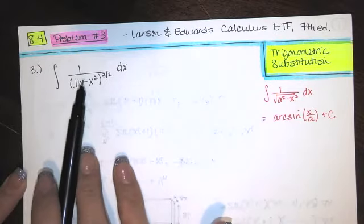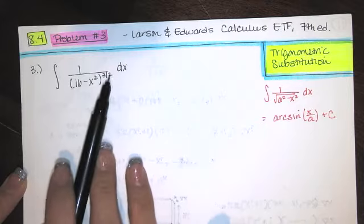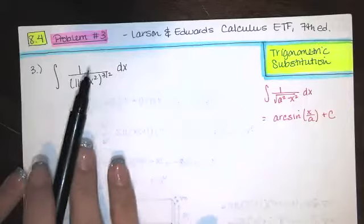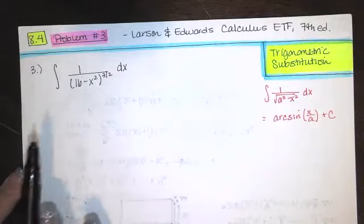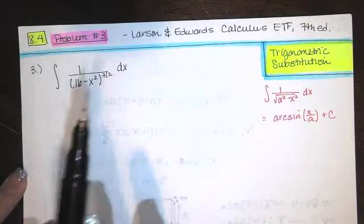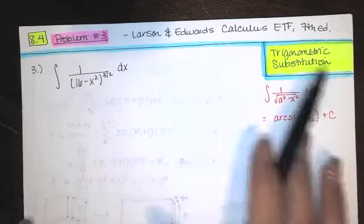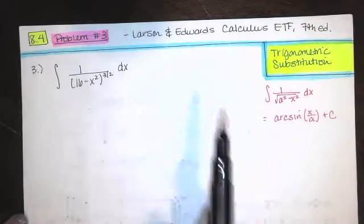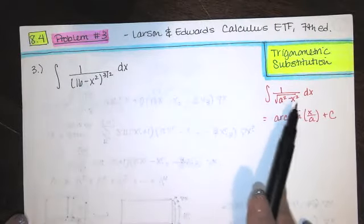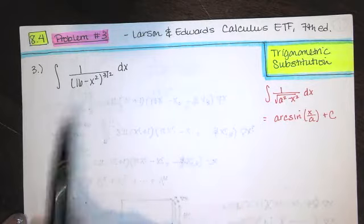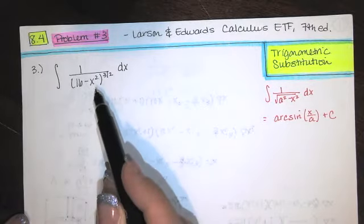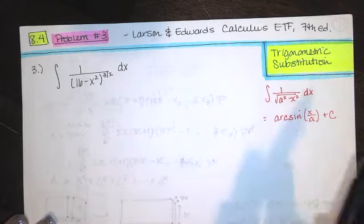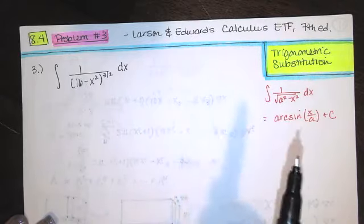If it looks like an arc sine but it's not an arc sine because it has the wrong exponent, and it's not a u-sub — there's no x in the numerator that would allow us to use a u substitution — then we're going to make a sine substitution. If it's a u-sub, do the u-sub, and if it's not but it looks like that a squared minus x squared from the arc sine antiderivative, we let x equal a times sine of theta.